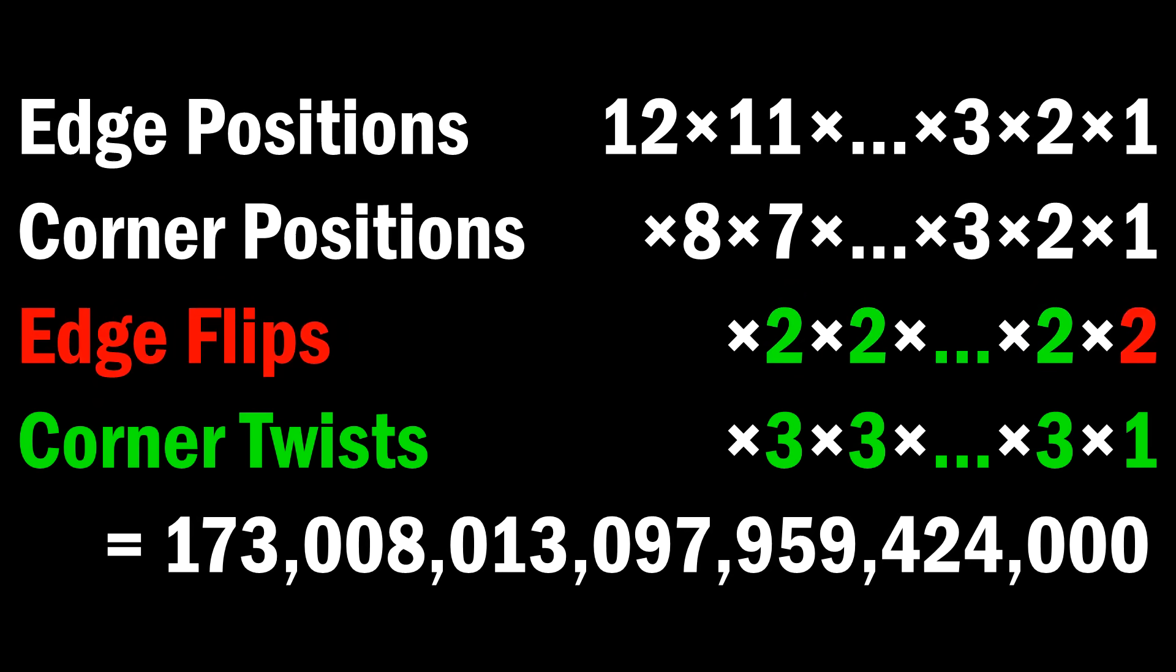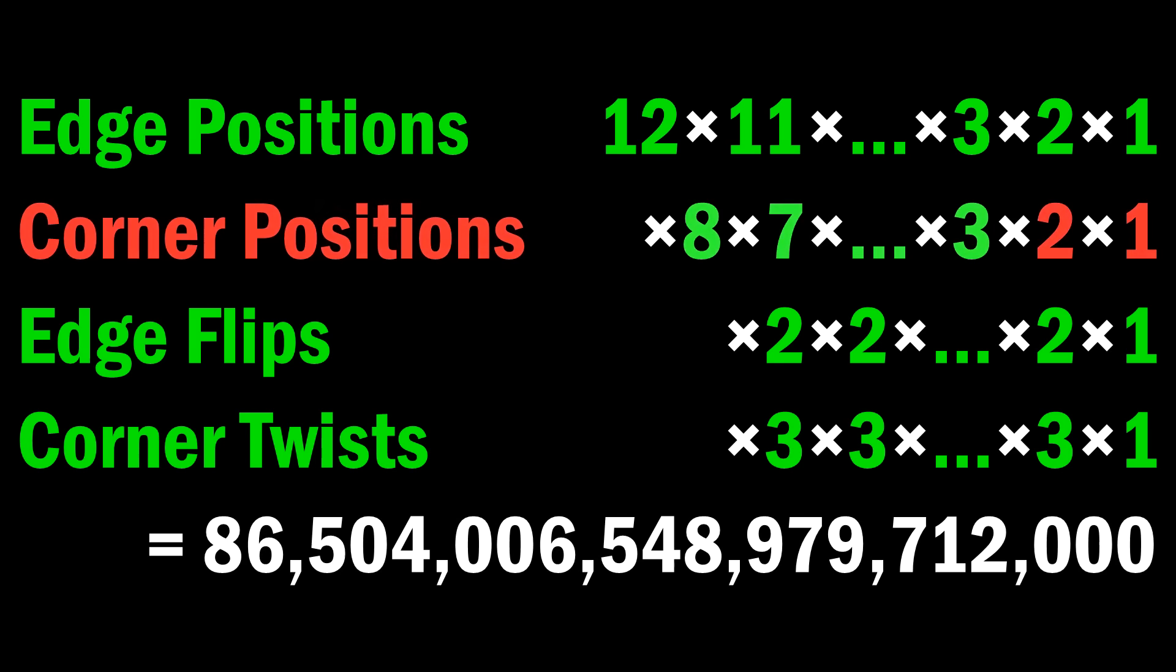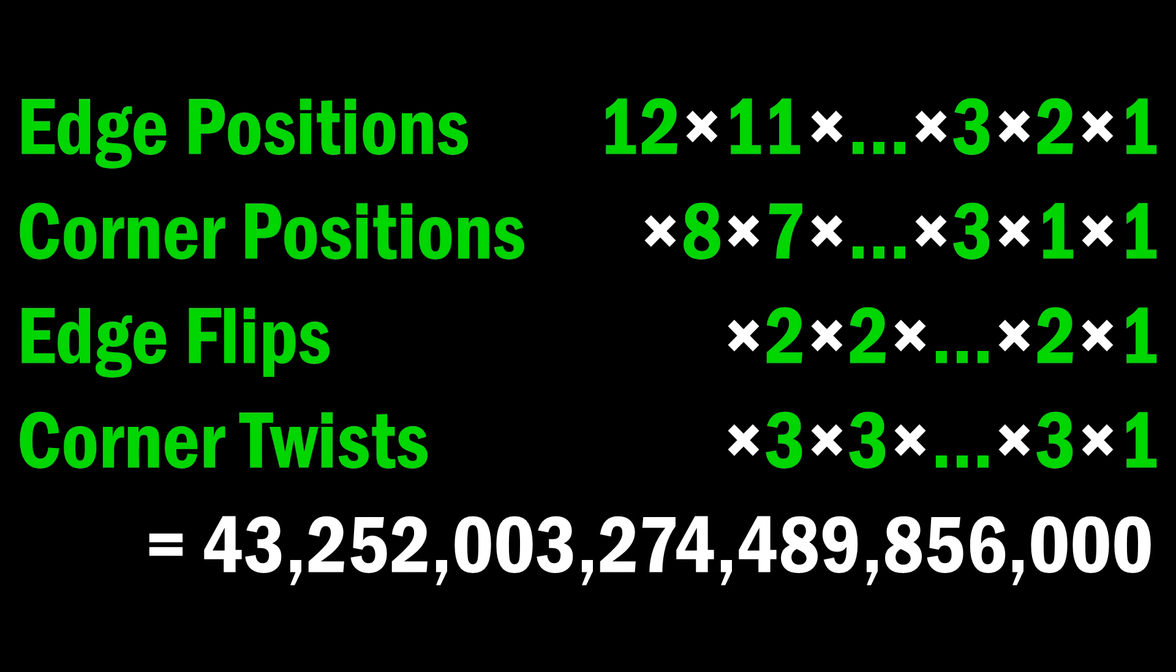And the same idea applies to edges. The last one has to be flipped just the right way, so that I don't end up with one flipped edge at the end. So again, I only have one option here. And the last change we make here is, since I put in all the edges followed by all the corners, I can actually put the edges wherever I like. Then I can put the corners wherever I like, down to the last two. For the last two corners, if I put them in the wrong positions, then I end up with an extra swap on the cube, which is not solvable. But if I put them in the right way, then it's fine. So for the last two corners, there's only one option that actually keeps the cube solvable.